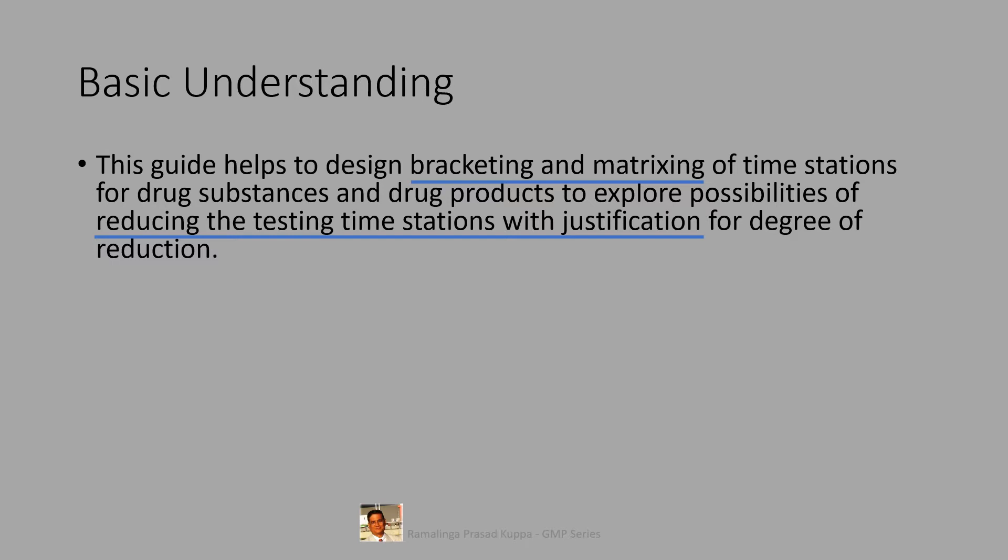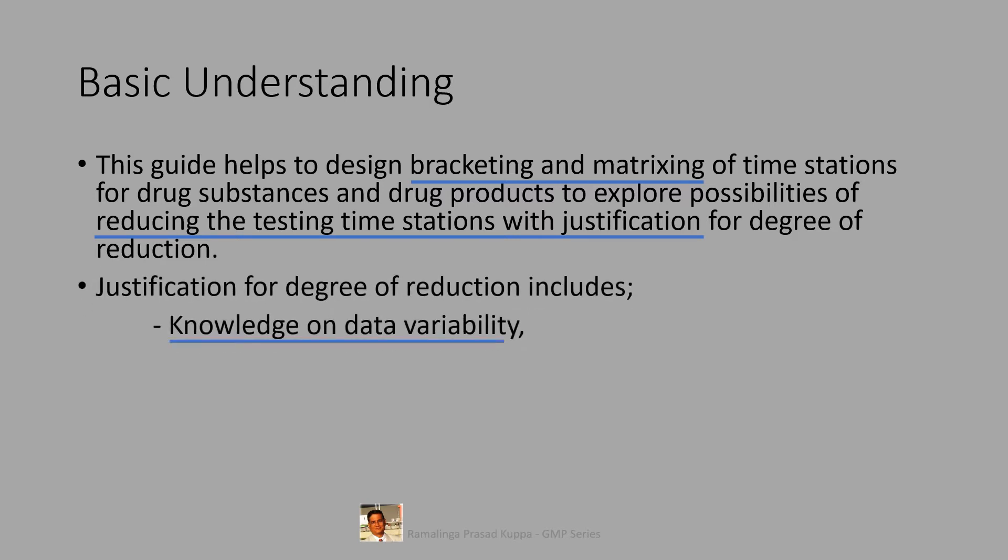Other options are very less in API's case. The degree of reduction in time stations and types of bracketing is possible only when knowledge on data variability is available. You should understand the variability knowledge as statistical variability. It is a dispersion of data. You can call it as data spread also. This is a measure of how far the data is moving around the main value. This can be established only by statistical analysis.